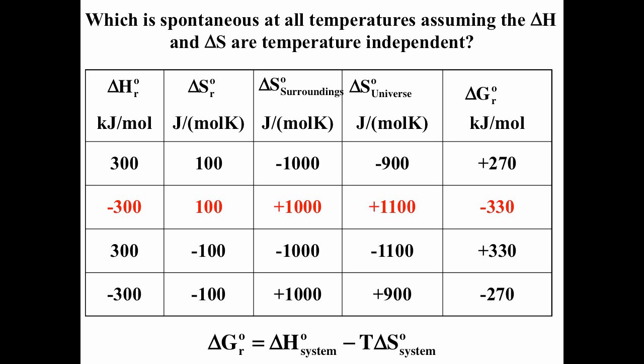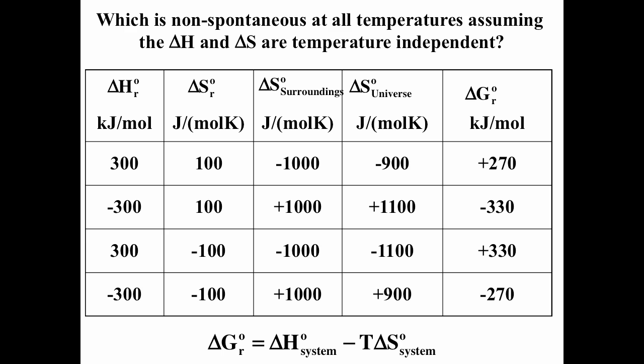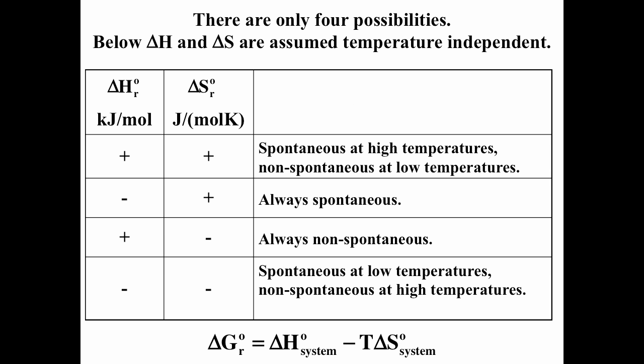The last reaction has a negative ΔG, but ΔH and ΔS have the same sign, so spontaneity depends on temperature. For a reaction that is non-spontaneous at all temperatures, ΔG must be positive and ΔH and ΔS must have different signs. The third reaction has positive ΔG and ΔH and ΔS with different signs, making it non-spontaneous at all temperatures. So we have four possibilities: spontaneous at high temperatures only, spontaneous at low temperatures only, always spontaneous, and always non-spontaneous — assuming ΔH and ΔS are temperature independent.